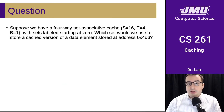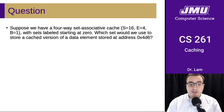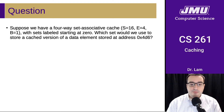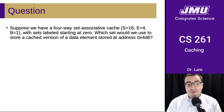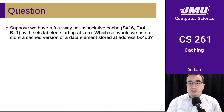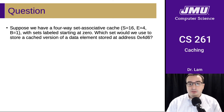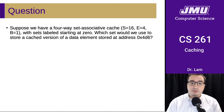Here's another question: suppose we have a four-way set associative cache with sets labeled starting at 0. Which set would we use to store the same address under this scheme? The lookup actually works exactly the same as before — the only difference is that we now need to examine multiple lines inside the cache to find the one we're looking for. So we would still be looking for set number 6.